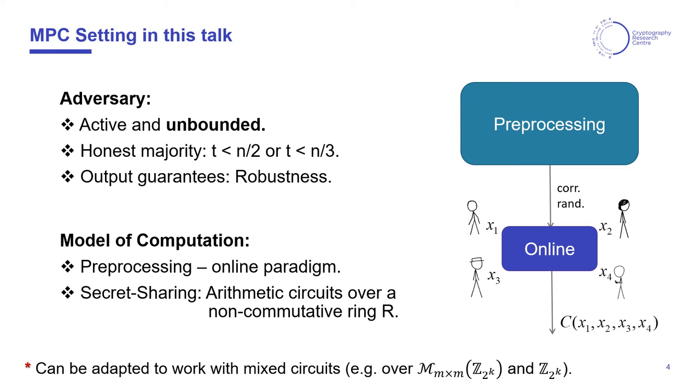I have a small footnote here to bring up that our work could be easily adapted to deal with mixed circuits, where some gates would be over a non-commutative ring, such as a matrix ring, and the other wires and gates could be over the ring that this matrix ring is defined.